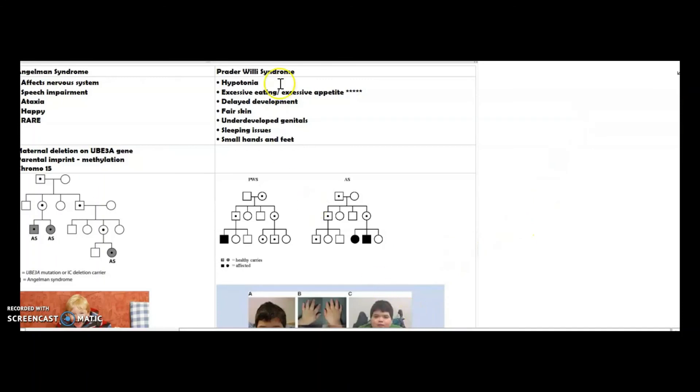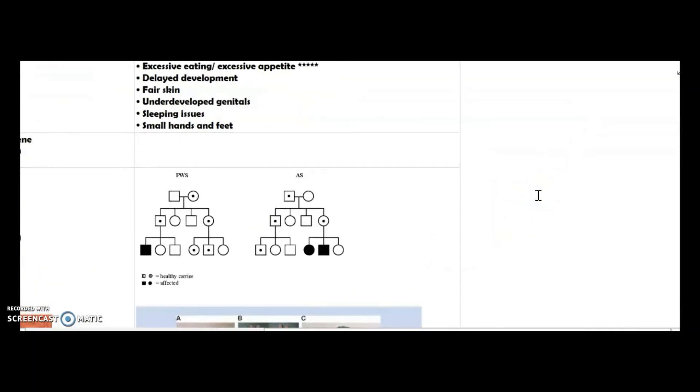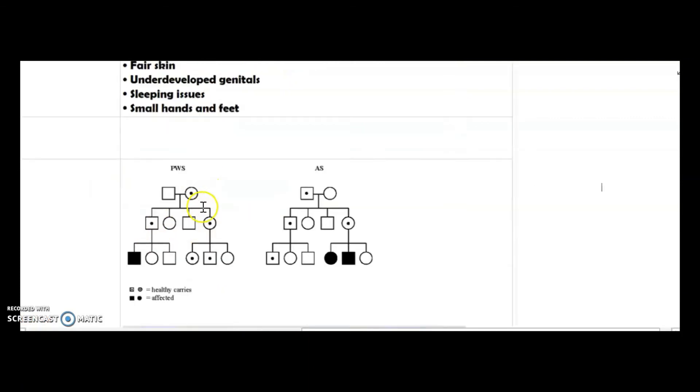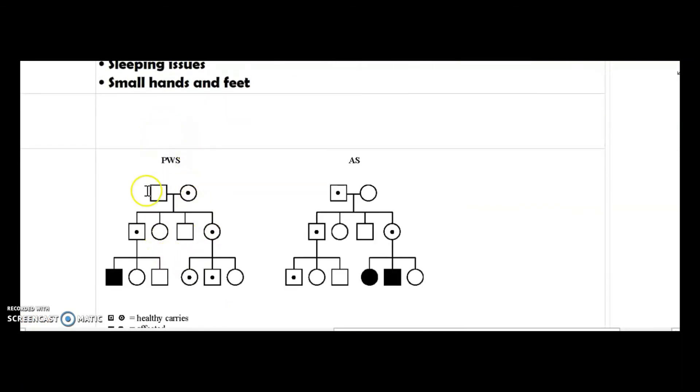I could not find a pedigree just for Prader-Willi syndrome, but I found it with Angelman syndrome, so they're like side by side to compare. As I stated before, this is Prader-Willi right here; AS is Angelman syndrome. Squares are males, circles are females, the ones with the dot are carriers, the ones that are shaded in are the ones affected.